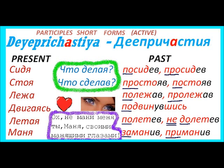Let's repeat these past forms: посидев, просидев, простояв, постояв, полежав, пролежав. As you hear, the voiced consonant at the end sounds voiceless. Then: подвинувшись — having moved; полетев, полетев — having flown somewhere; не долетев — not having reached the destination by flying; заманив, приманив — having teased somebody to some place with something.